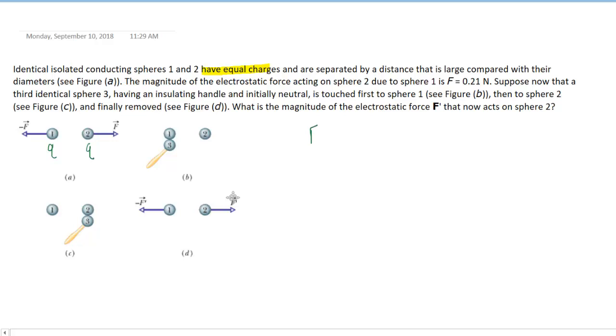Now we know from Coulomb's Law that this repulsive force is equal to K times the magnitude of charge on sphere one, multiplied by the magnitude of charge on sphere two, divided by the distance that separates them, squared.